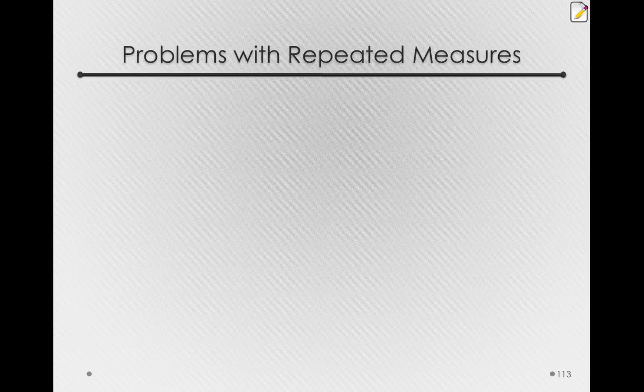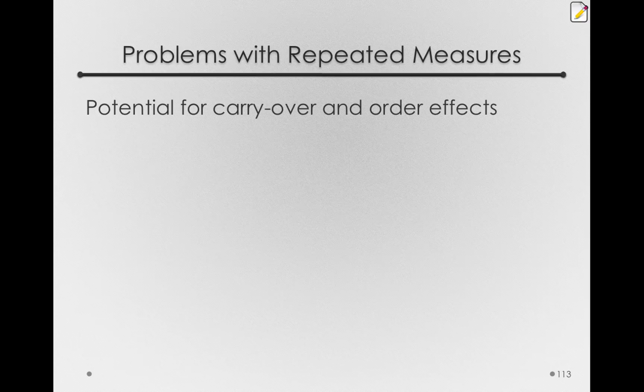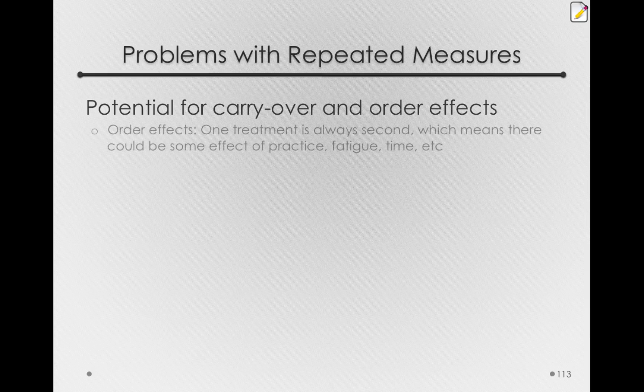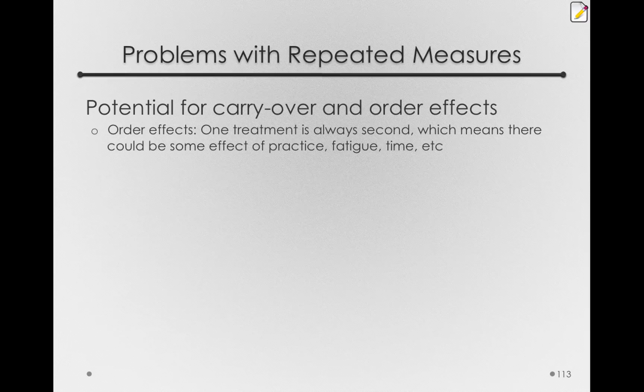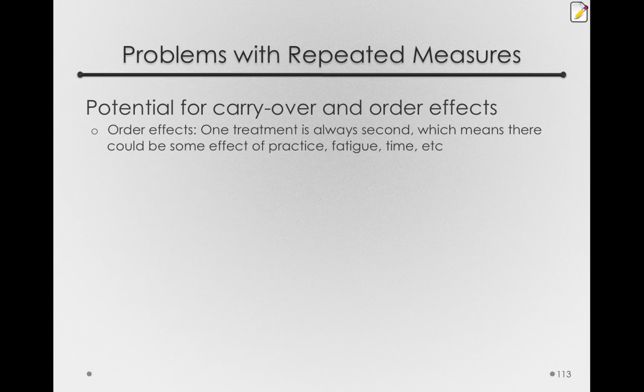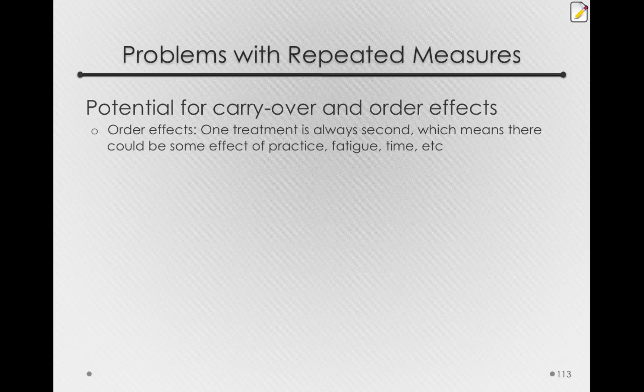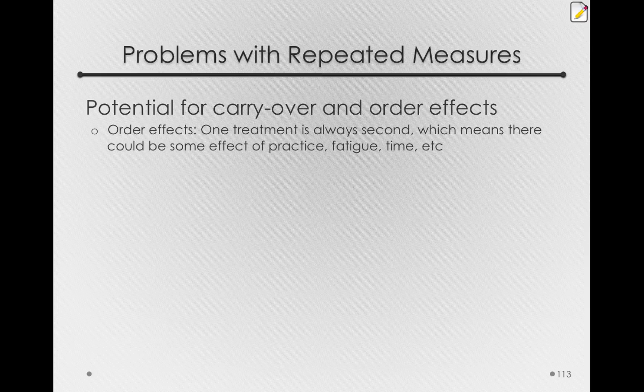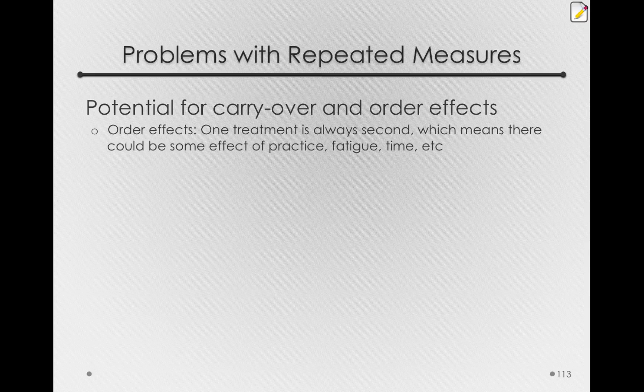But there are also some drawbacks and problems with repeated measures that we have to be aware of. First, with any repeated measure study, there's a potential for carryover or order effects. This is because we're measuring people more than once. First, order effects is when one treatment is always second. And this is just true. You always have to have one treatment following another. Which means there could be some effect of practice, fatigue, simply the time in the study, or anything like that. If you always have one of your treatments at the end of a study session, then it might just be that people are tired. And you'll wrap in that effect of fatigue with whatever measurements you make. We don't want to confound our studies. And so by having order effects, we have another explanation for some effect we observe. So we don't want those in our studies.